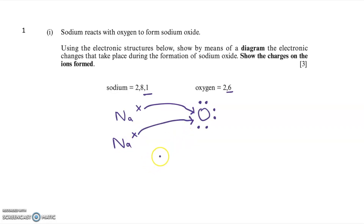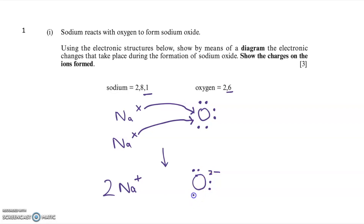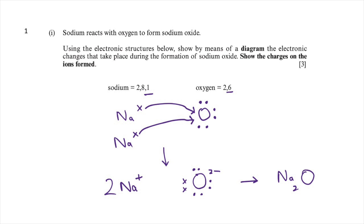Sodium needs to lose one electron and oxygen needs to gain two. So in this diagram I've got two sodium atoms both losing one electron, and these are being transferred to the oxygen, which needs to gain two electrons. The result is I form two Na⁺ ions and one O²⁻ ion. This is a three mark question: one mark for drawing two sodium atoms losing one electron each, one mark for the oxygen atom gaining two electrons, and one mark for drawing the correct ions — two Na⁺ and one O²⁻.